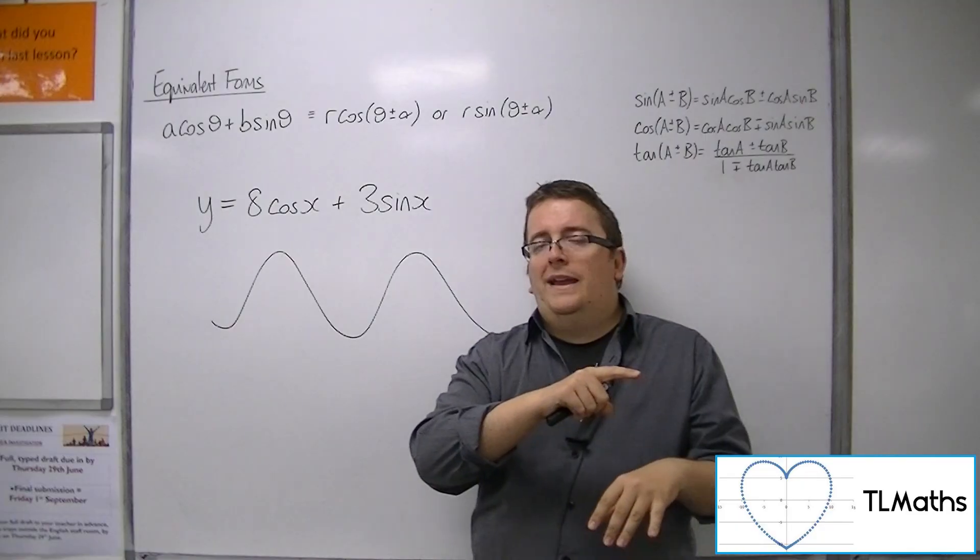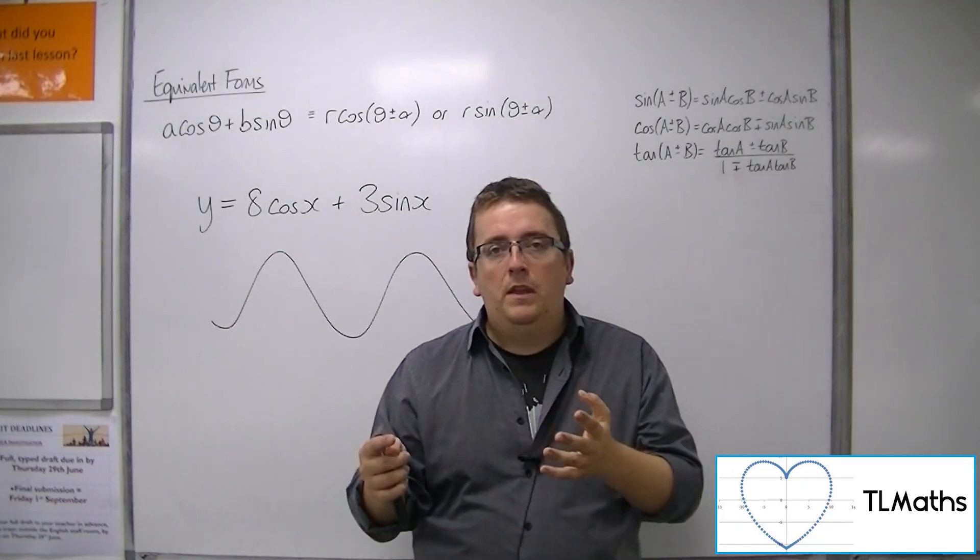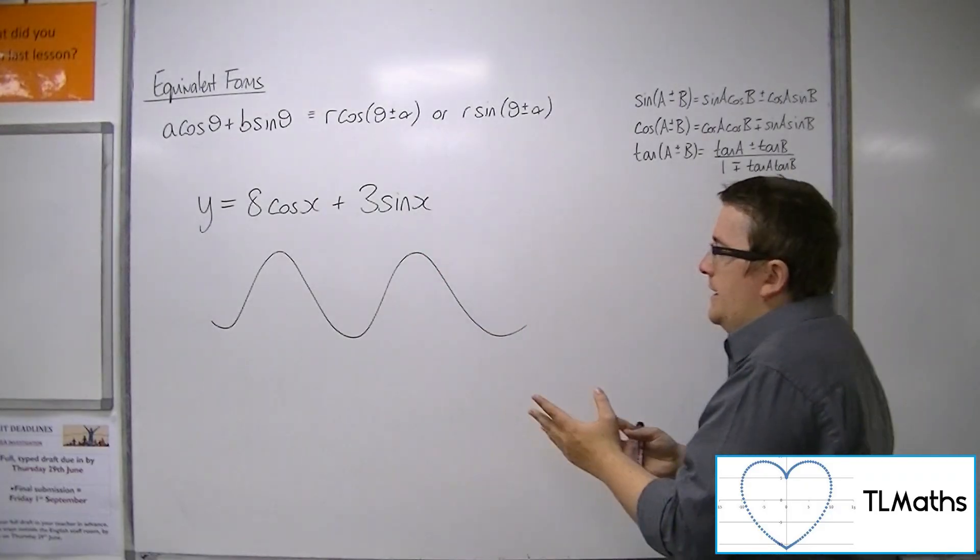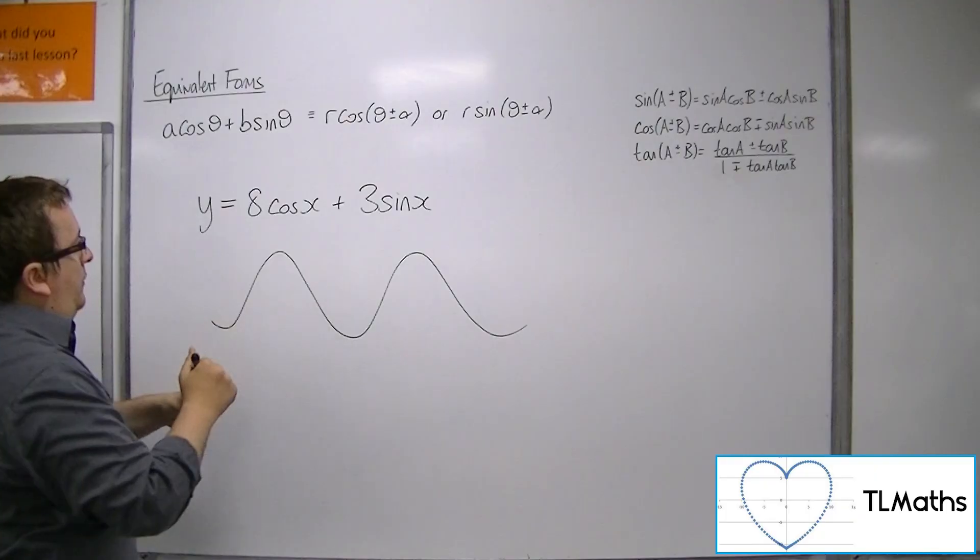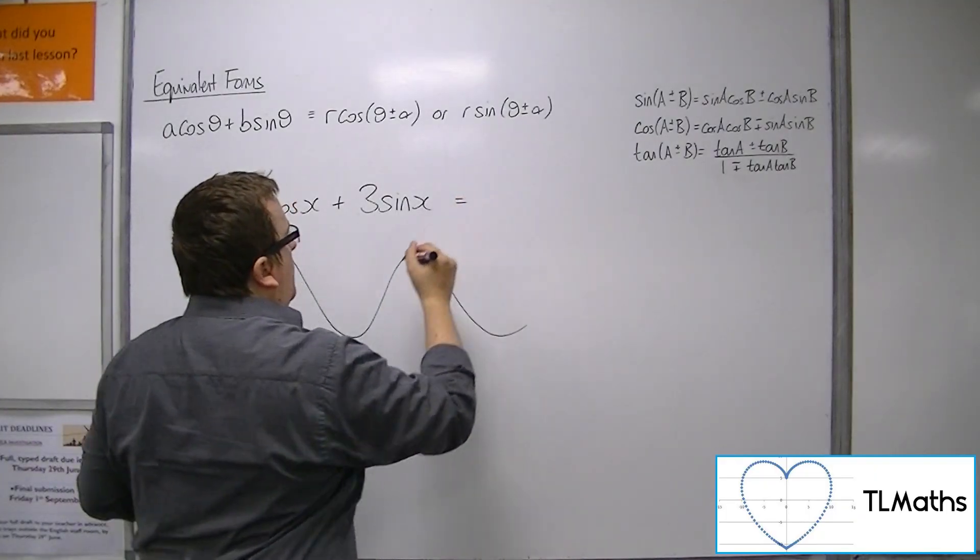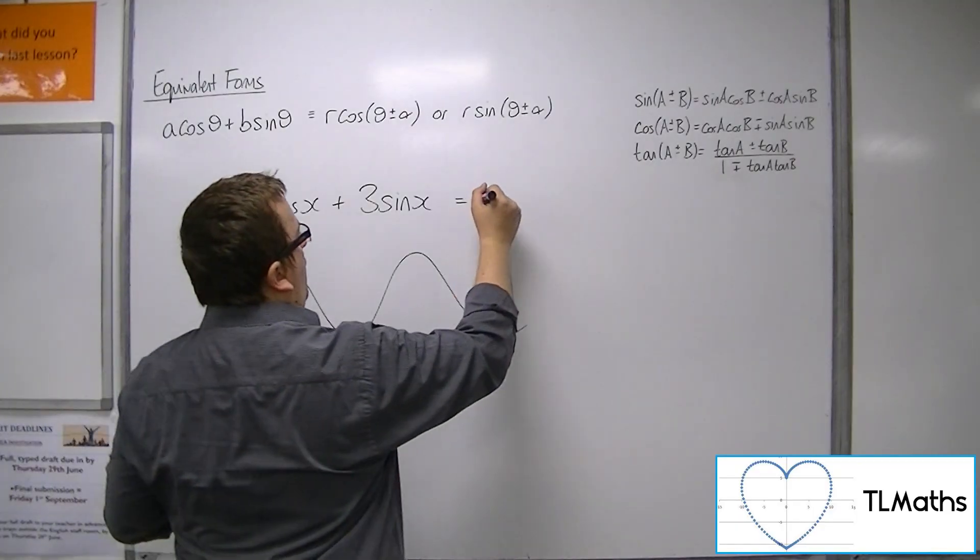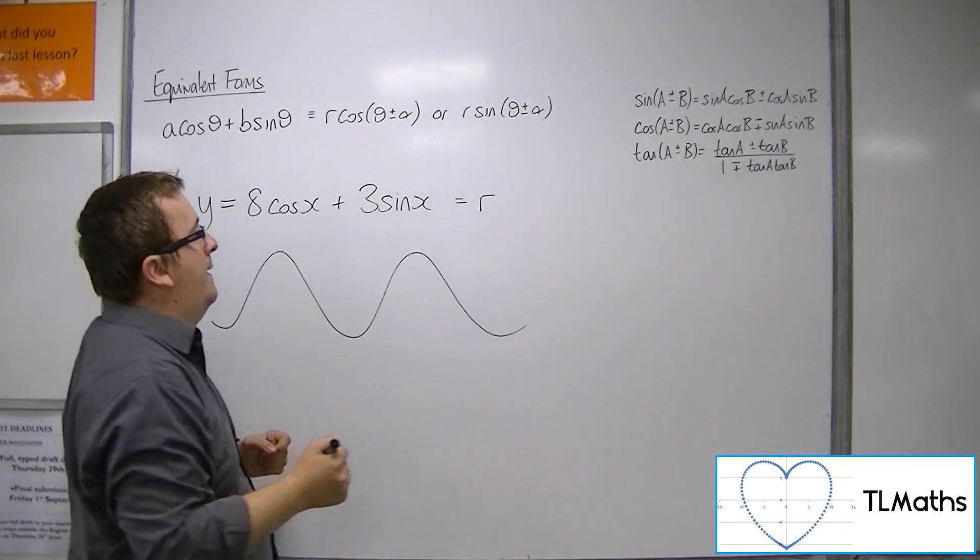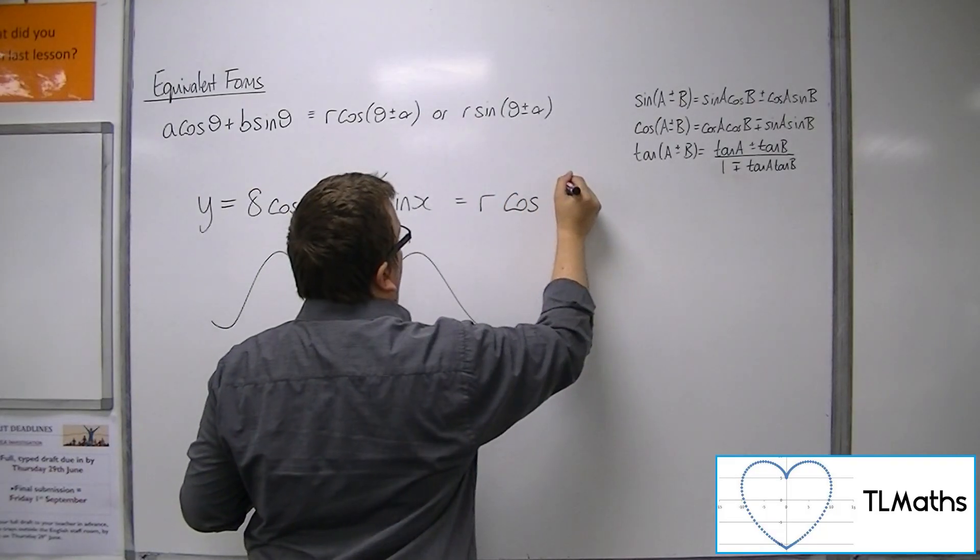Now we know that sine is just a translation of cosine, and vice versa. So what you could do is, can we write this in some form where we take account of the stretch parallel to the y-axis, some multiplier of either cos or sine.